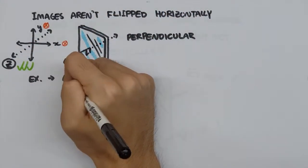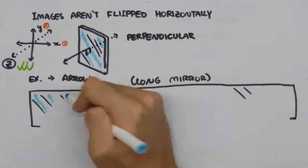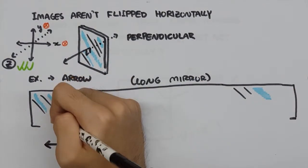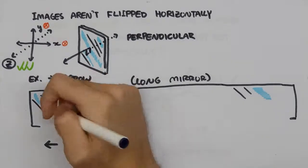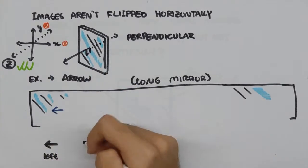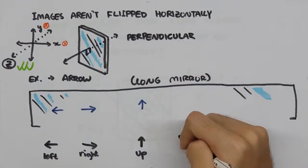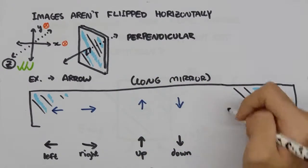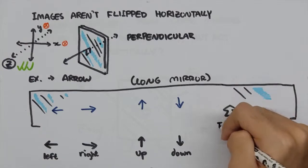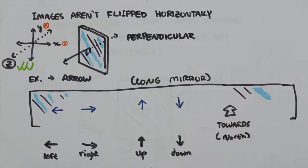This can easily be demonstrated with the use of an arrow. When the arrow points to the left, the mirrored arrow also points to the left, the right to the right, up, up, down, down. But when the arrow points at the mirror in the northern direction, the mirrored arrow points away from the mirror to the south, and vice versa.